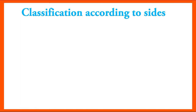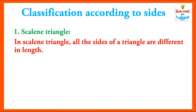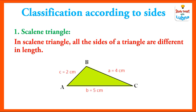Classification of triangle according to their sides. Number one is a scalene triangle. In a scalene triangle, all the sides of a triangle are different in length. Its sides are represented by small letters a, b and c. The length of side AB (small c) equals 2 cm, BC (small a) equals 4 cm, and CA or AC (small b) equals 5 cm. All three sides are different in length, so this type of triangle is called a scalene triangle.